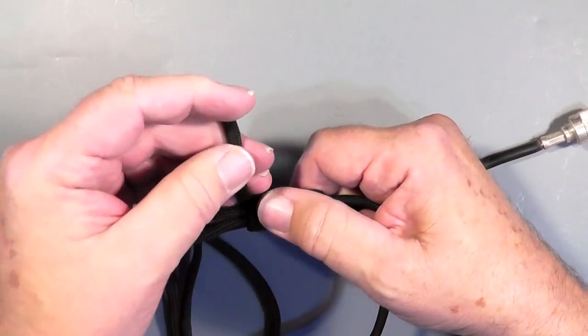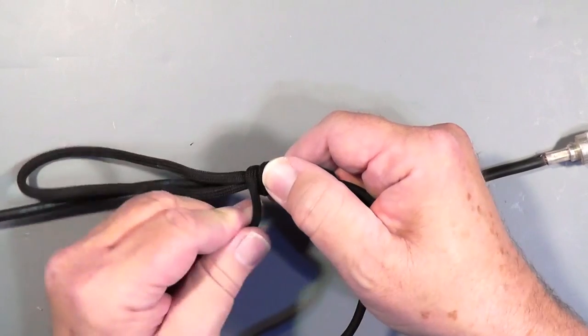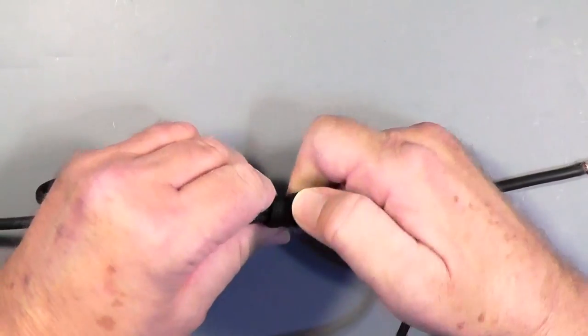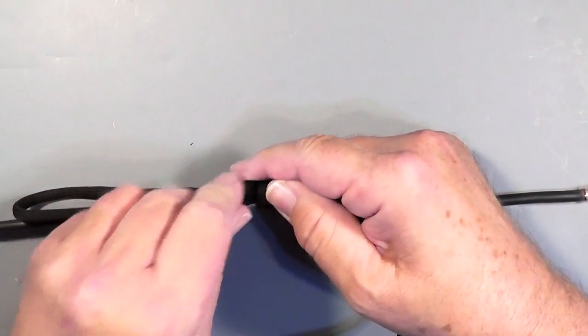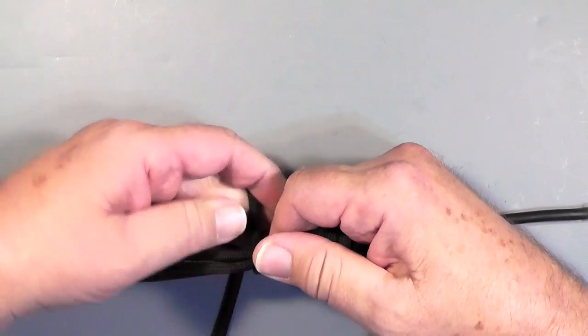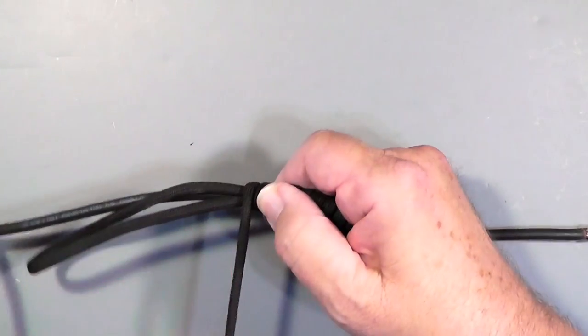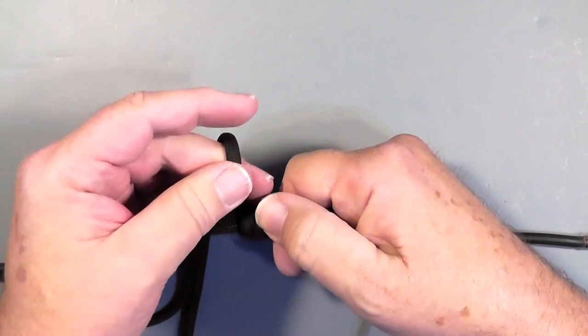If you find you don't leave enough rope to leave a big enough knot or a long enough knot, just undo it, give yourself a little bit more, and try again. It only takes a moment anyway to put this thing together.